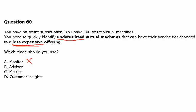Option B is Azure Advisor, a personalized cloud consultant that helps follow best practices to optimize Azure deployments. It analyzes resource configuration and usage telemetry, then recommends solutions to help improve cost effectiveness, performance, reliability, and security of Azure resources. This is the correct solution, as it helps us reduce costs and improve multiple aspects of any Azure resource.